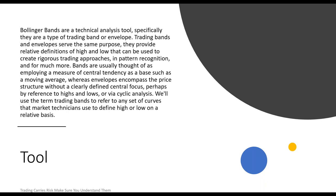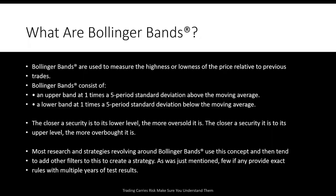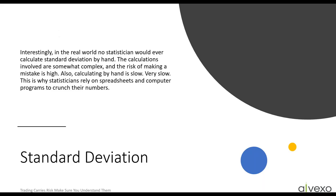Bollinger Bands are a technical analysis tool — specifically, they are a type of trading band or envelope. Trading bands and envelopes serve the same purpose: they provide a relative definition of high and low that can be used to create rigorous trading approaches. Bands are usually thought of as employing a measure of central tendency — that's our moving average, the central line — whereas envelopes do not have this same type of structure. That's really the difference between a band and an envelope.